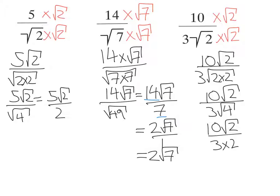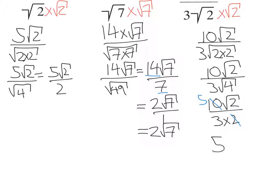And what you can see here is I've got a 2 on the bottom, and I can cancel 2 out of the front to make that 5. So my answer for this last one is 5 root 2 over 3.